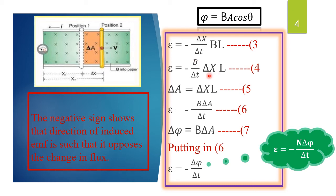Now, in this equation, if we shift and group delta x and L together while moving B to one side, we write: E is equal to minus B over delta t into delta x times L. Students, this term — delta x times L — if we observe it in the activity, it is basically the increase in the area of the loop. The increase in area is represented as: delta A is equal to delta x times L. Substituting this into equation number 4: E will be equal to minus B times delta A over delta t.